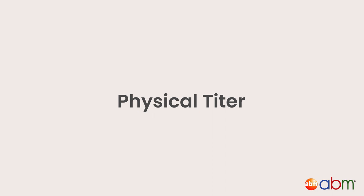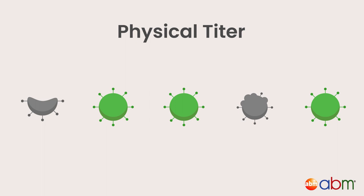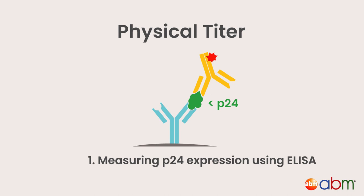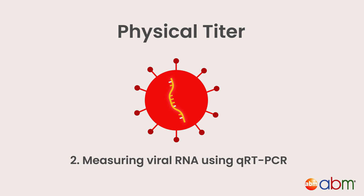Physical Titer. Now we will briefly explain physical titer methods, which measure the number of viral particles present regardless of functionality. The two major methods for determining physical titer are: one, measuring p24 expression using ELISA, and two, measuring viral RNA using qRT-PCR.